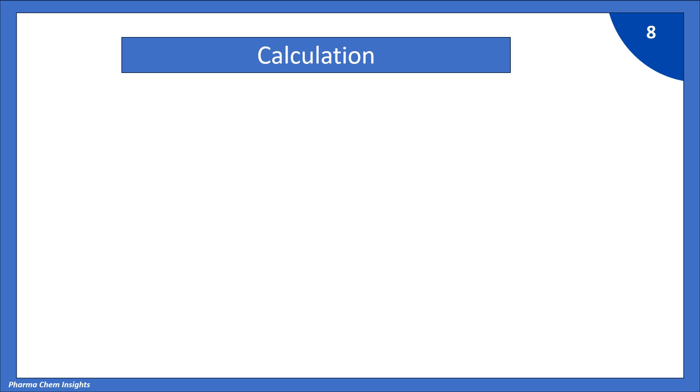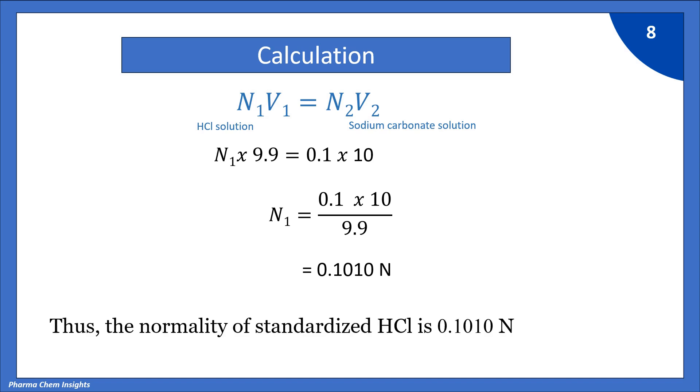Now let us see the calculation part. For calculation, we have formula N1 times V1 equals N2 times V2, where N1 and V1 represent normality and volume of HCl solution, and N2 and V2 represent normality and volume of sodium carbonate solution. V1, volume of HCl consumed, is 9.9. N2, normality of sodium carbonate solution, is 0.1. V2, volume of sodium carbonate solution, is 10. By calculating, we get N1 equals 0.1010 normal. Thus, the normality of standardised HCl is 0.1010 normal.